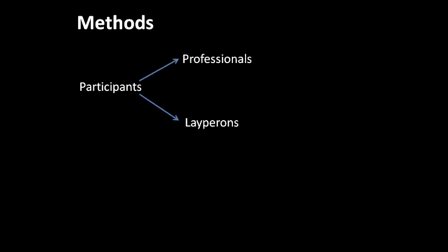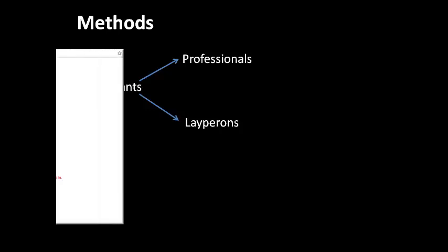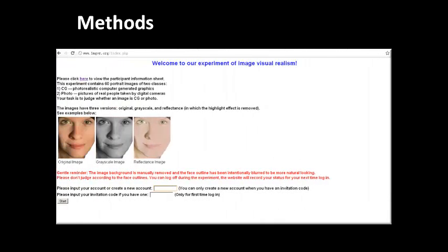Participants' task was to discriminate between CG and photo images. We coded participants as professionals if they use image processing software in their daily job. Participants coded as laypersons came from various industries except for those related to image processing. We established our own experiment website.